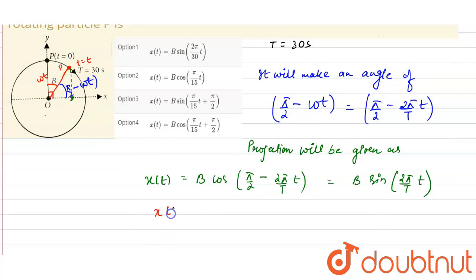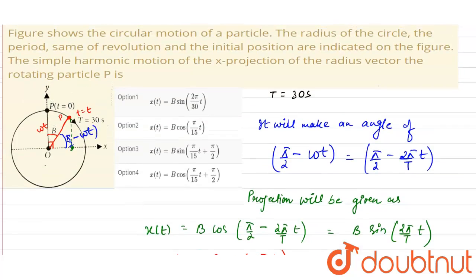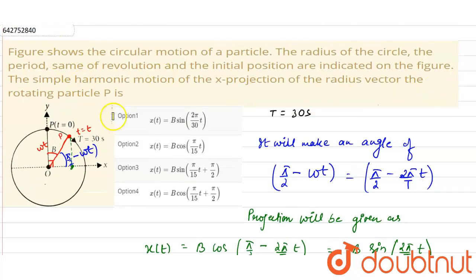So x(t) will come out as x(t) will be B sin(2π/30 times t). So this will be the equation of the x projection of the particle P. Now choosing from the options we see that our option number 1, x(t) equals B sin(2π/30 t), is the correct option for us. Thank you.